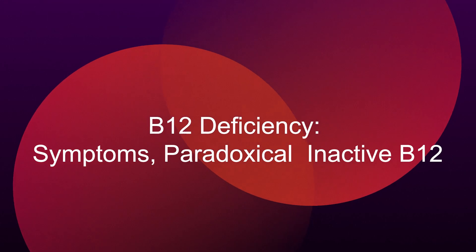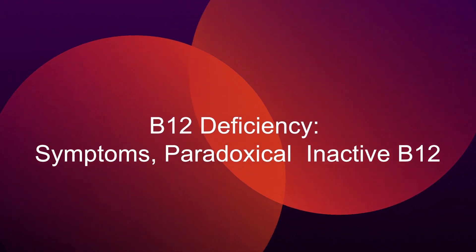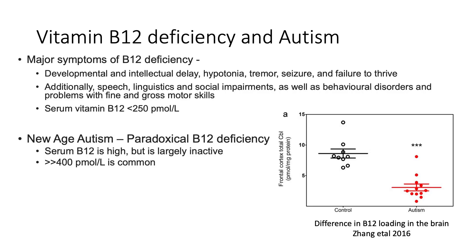The main symptoms in B12 deficiency include developmental and intellectual delay, hypotonia, tremor, seizure, and failure to thrive. In addition, they generally have speech and linguistic problems and social impairments — they turn away, don't participate, seem disjointed, and don't bond well. Behavioral disorders are also common, where you can't control the kids.